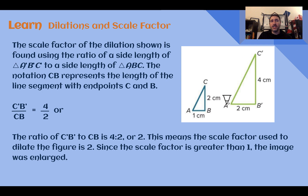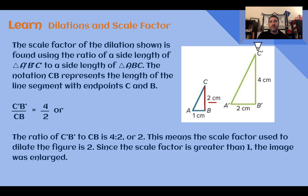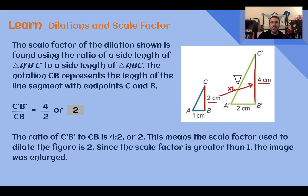The scale factor in a dilation is found by finding a ratio of one triangle to the other. Looking at corresponding sides, CB in our pre-image was 2 centimeters, and C'B' in our image is now 4 centimeters. Dividing image by pre-image: 4 divided by 2 equals 2. So the scale factor was 2 — we multiplied by 2 to go from the pre-image to the image. Since this scale factor is larger than 1, the image is larger than the pre-image.